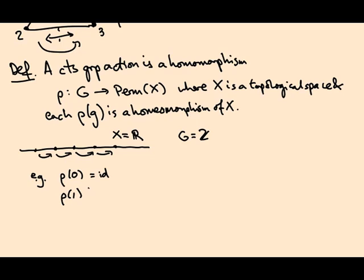So for example, rho of 0 is the identity map. Rho of 1 is the map that sends x to x plus 1. Rho of n, more generally, is the thing that sends x to x plus n. That's an example. Translation by an integer amount is a continuous map. It's a homeomorphism of the real line. Its inverse is subtracting off that integer. So this is a continuous group action.